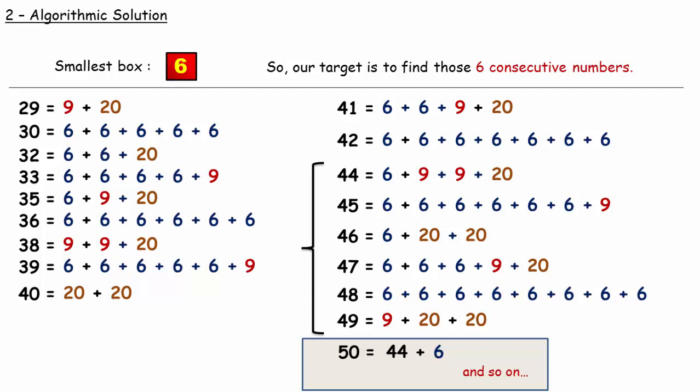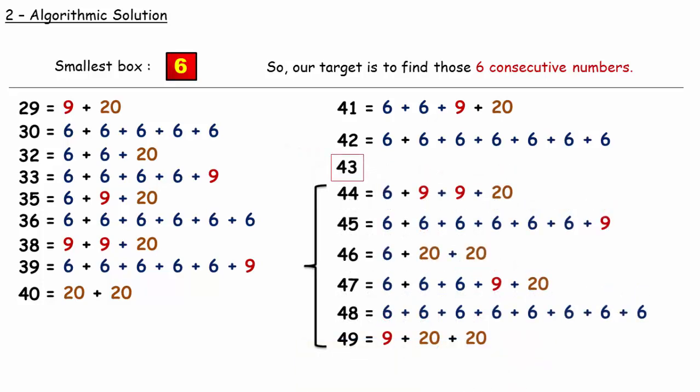So the highest possible number that cannot be obtained with any combination is the number just before this set of consecutive numbers, that is 43. And this number is called as the highest non-McNugget number.